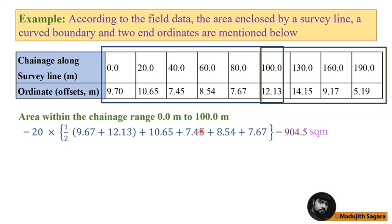And you can see the summation of each and every other leg: 10.65 is here, 7.45 is here, 8.54 is here, 7.67 is here. Okay, you can remember the previously used equation of mine. This is n1, the first offset. This is nn, the last offset. And this is second, third, like that.